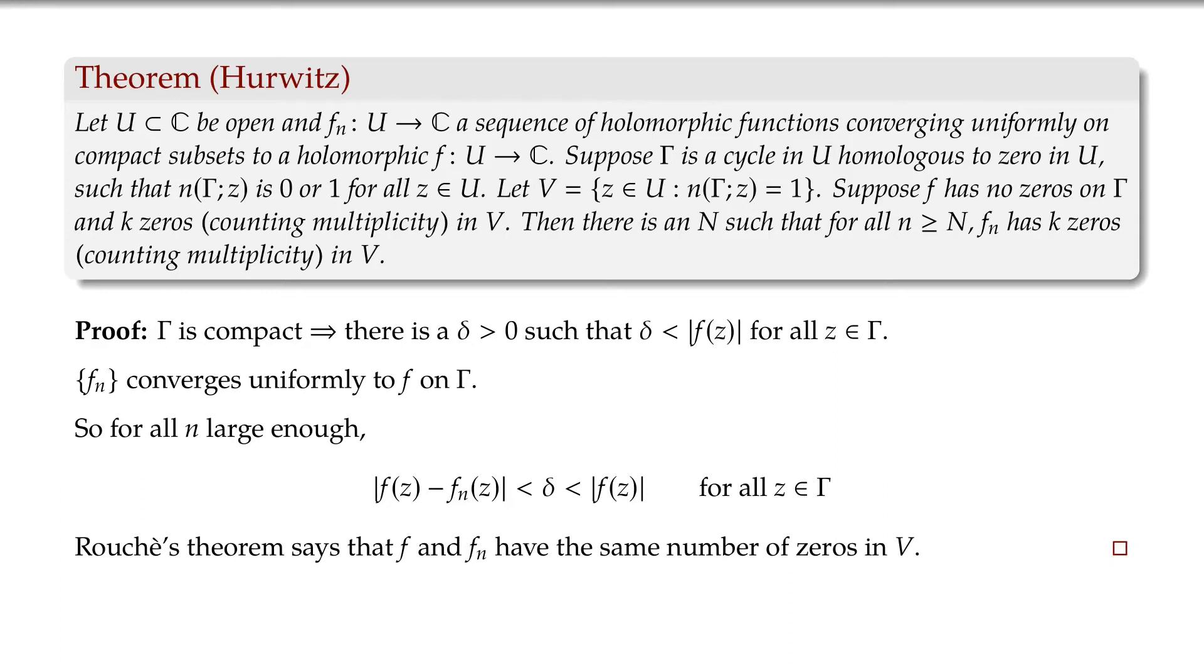Essentially, the main point is Rouché is already telling you what happens to zeros for if you have a function that's close enough. So Hurwitz is just another version of that. It's writing it in terms of a sequence instead of just two functions being close. Now, no zeros on gamma, that's necessary. Simple counterexample.